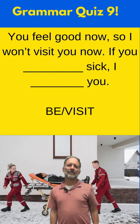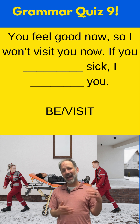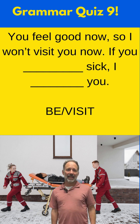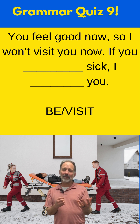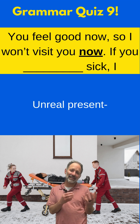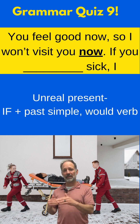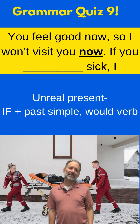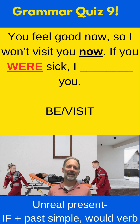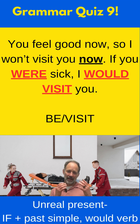Fill in the blank with the correct verb forms for this conditional sentence: You feel good now, so I won't visit you now. If you blank sick, I blank you. We'll use 'be' and 'visit.' We're talking about now, but it's an unreal situation. For an unreal present condition, we use if plus past simple, then would plus the verb. So: if you were sick, I would visit you — 'were' for the past, 'would visit' in the main clause. That's for an unreal present situation.